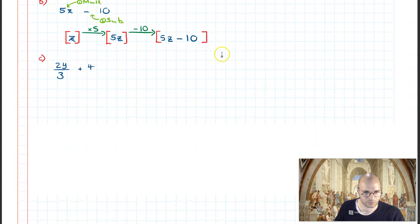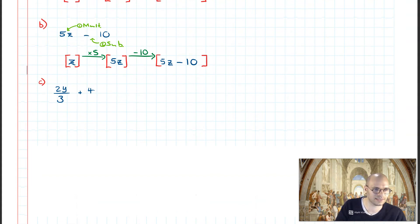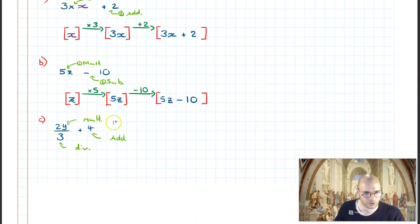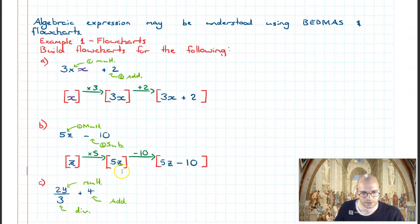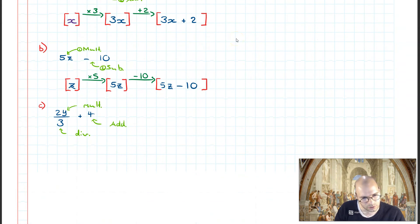We increase in complexity. We have 2y over 3 plus 4, and we're going to build another flowchart. We see we have a multiplication, a division, and an addition. Looking at BEDMAS, we have multiplication, division, and addition — so division comes first, multiplication second, addition third.